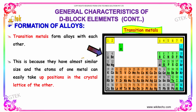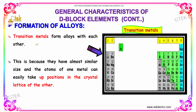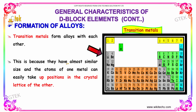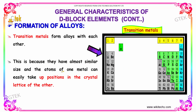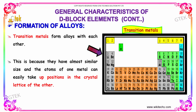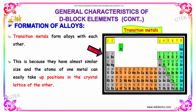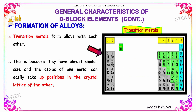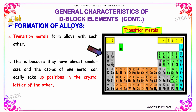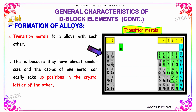Now let's move on to the formation of alloys. Transition metals form alloys with each other because they have almost similar atomic size, and the atoms of one metal can easily take up positions in the crystal lattice of the other. That is why they have the capability to form many different alloys.